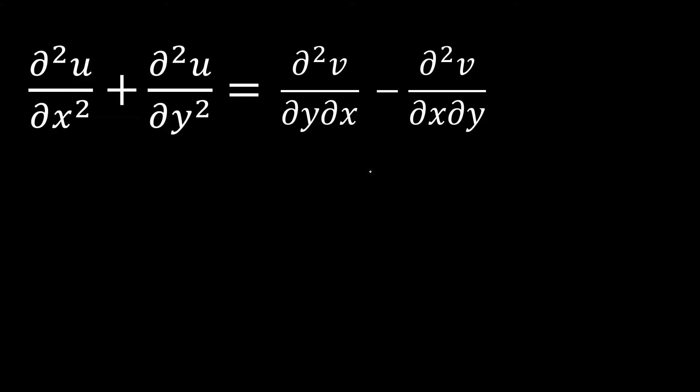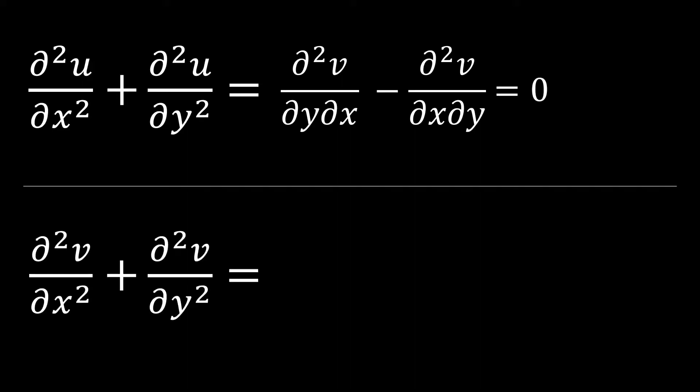And so by Clairot's theorem, we know that we have the same exact thing here and we're just subtracting one from the other. So it's zero. And similarly, we can take the same approach with the v or the imaginary part of a general complex function, see a similar pattern, and see that that is zero.